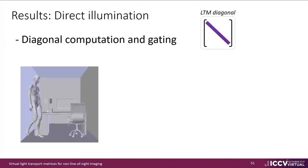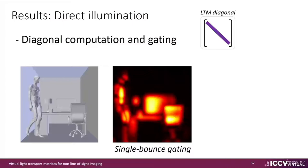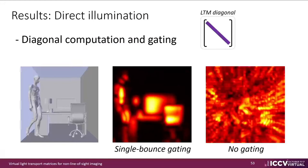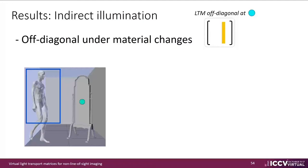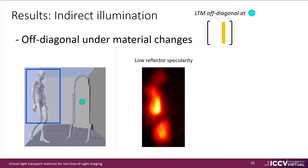We now illustrate the results of our NLOS LTM computation methodology. We show the effects of diagonal computation in a complex office scenario, including single-bounce gating, which produces a very clean estimation of direct illumination. If no gating is applied during light propagation, the resulting image is flooded with geometry defocus. We also illustrate how our off-diagonal computation shows changes of indirect illumination over a mannequin when changing the material of a reflector. The blue mark represents the illuminated location on the reflector. When the reflector's specularity is low, the mannequin shows indirect light over the entire torso, head, and legs.